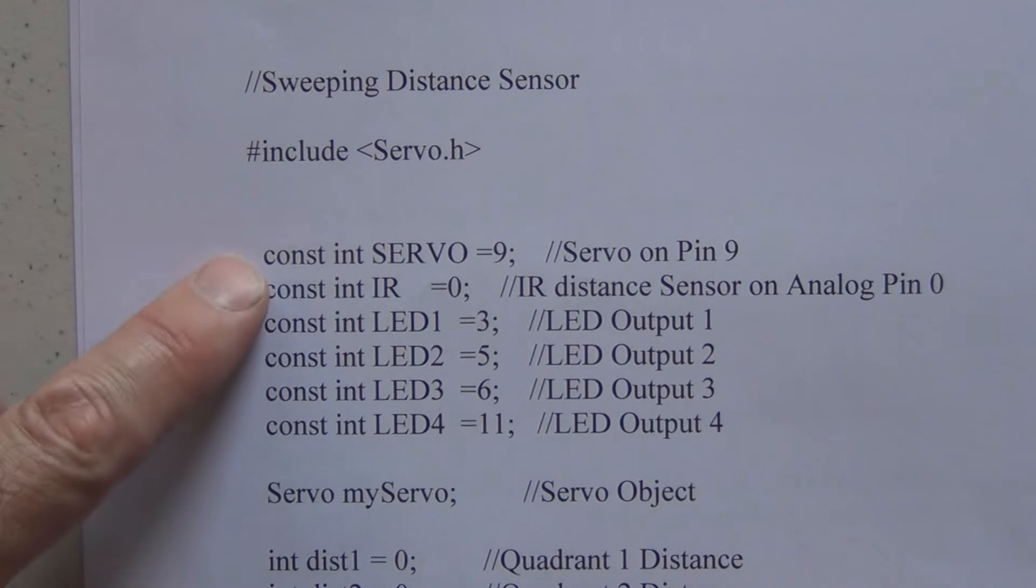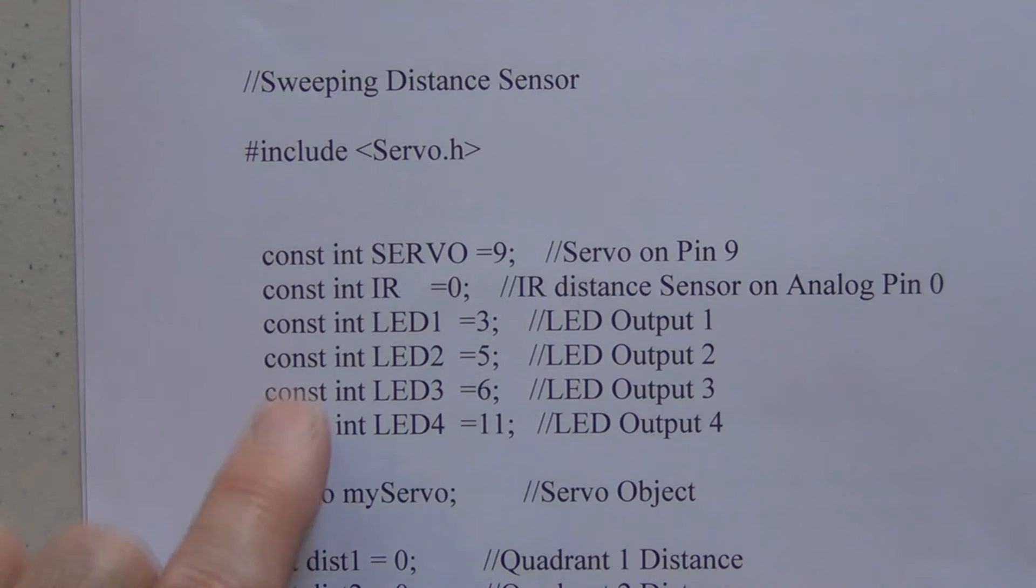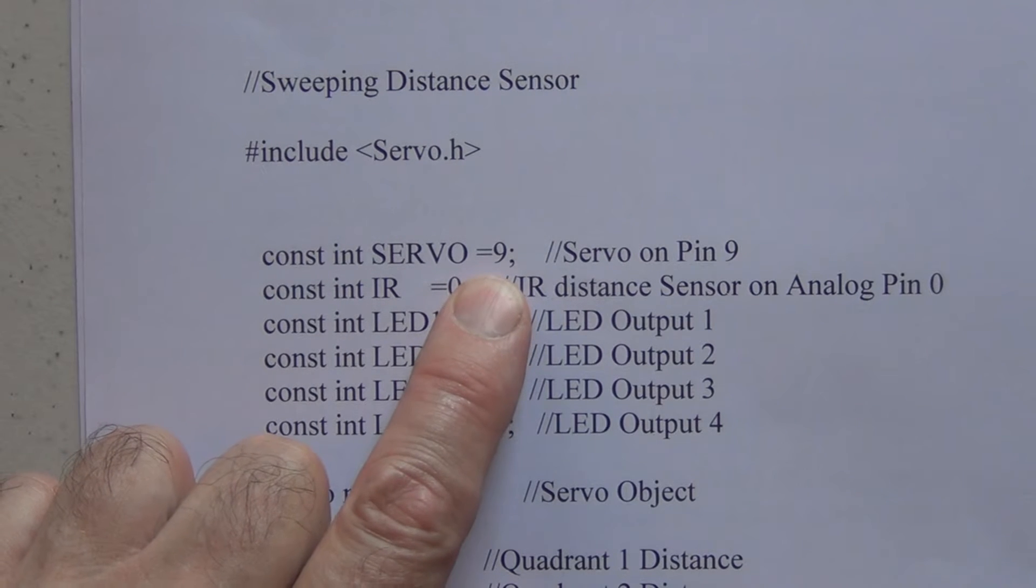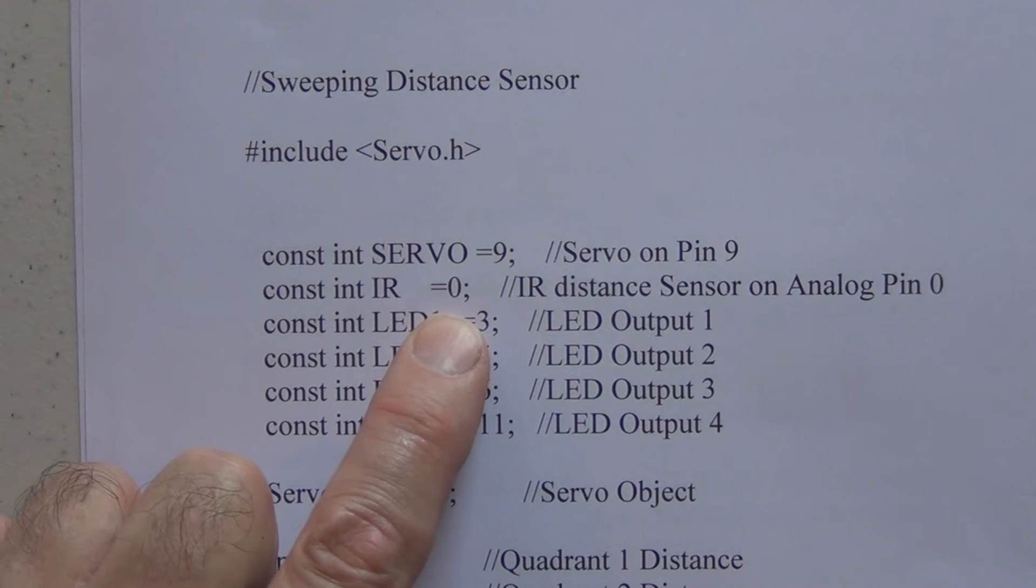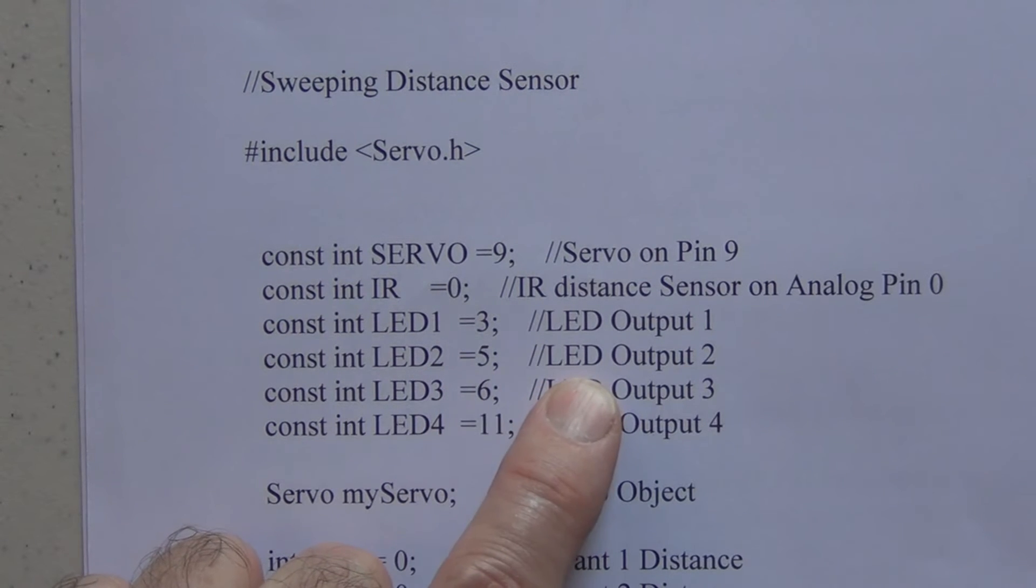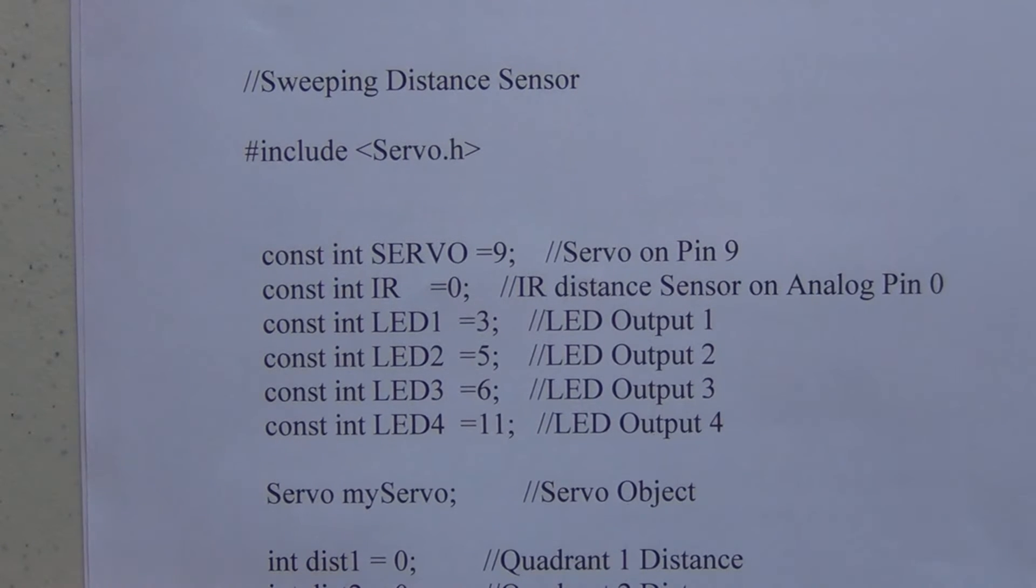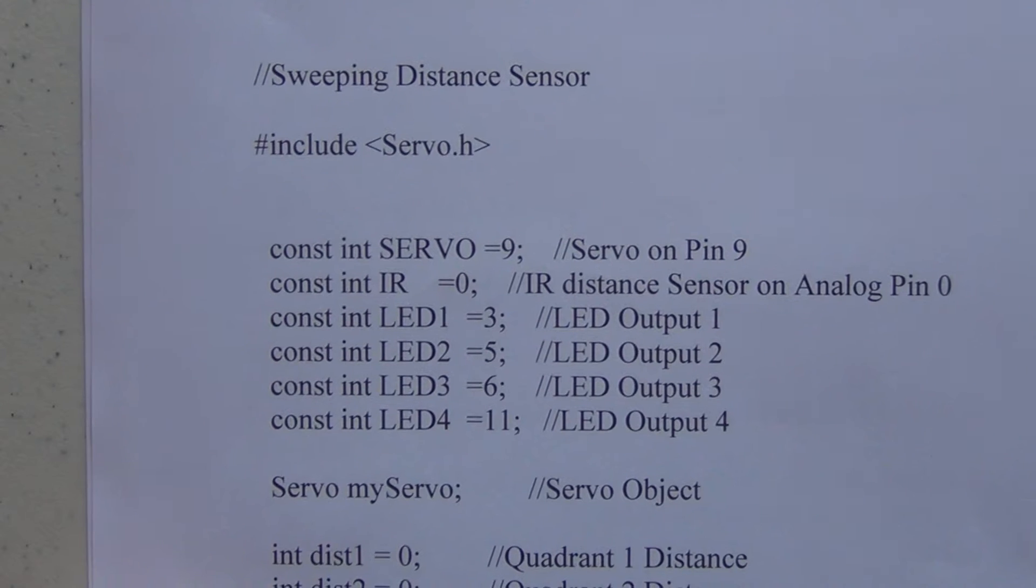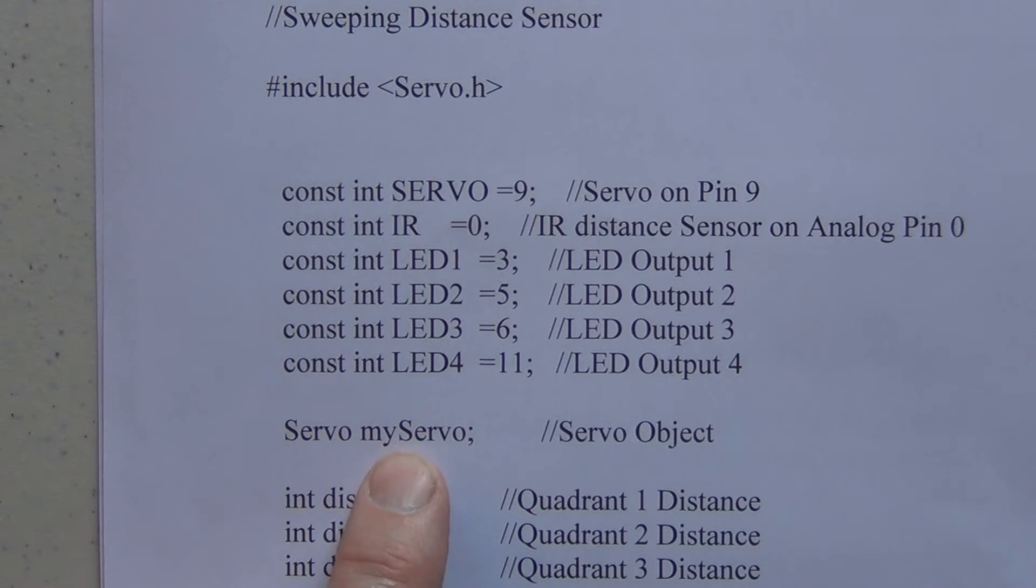Next we are declaring what pins we are using to connect everything up. We have the servo attached to pin 9. The IR sensor, which we will be reading the analog output from the IR sensor, is A0. And we have LED 1 attached to pin 3 - these are all the pulse width modulation pins - LED outputs 2, 5, 6, and 11. And we have to create the servo object, so the variable myServo is the servo object.